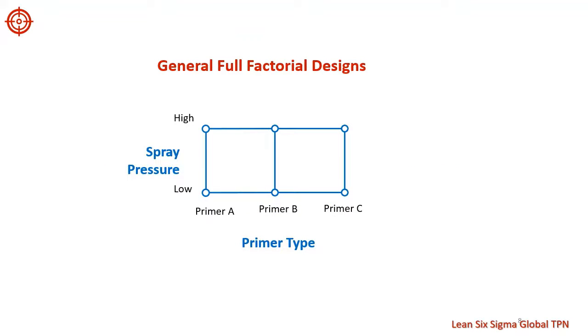General full factorial designs are used when any experimental factor has more than two levels. This diagram represents a general factorial design, where factor A is tested at two levels, while factor B is tested at three levels. For instance, if the ABC paint company were investigating the effect of three primers instead of only two, we would use a general full factorial experiment to understand the effect of the factors on paint adhesion.